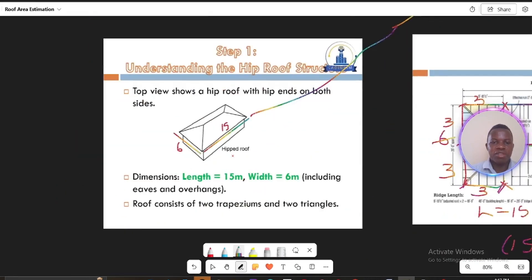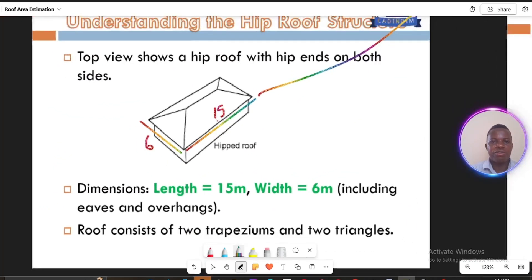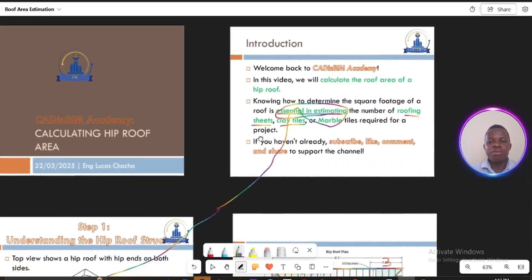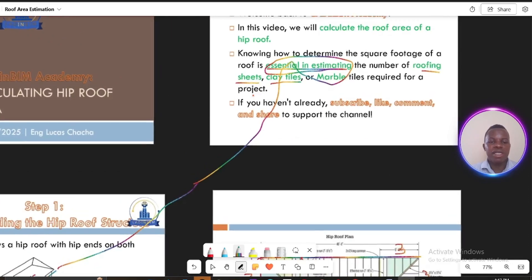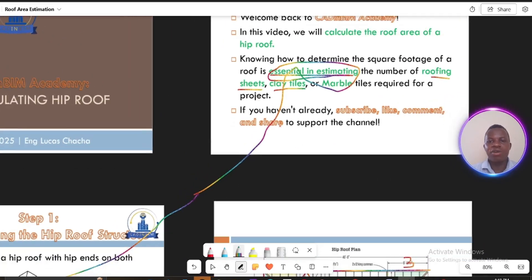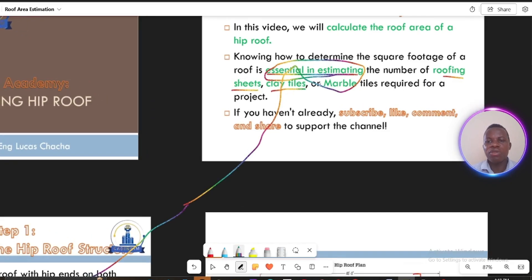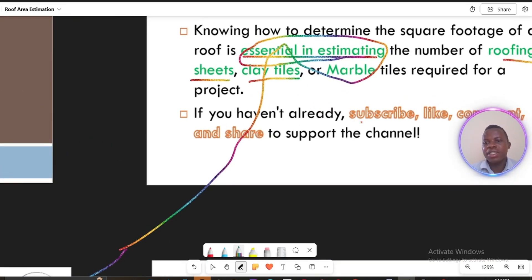This is what I'm referring to here, the area of this hip roof. The reason I'm teaching you how to calculate or estimate that area of a hip roof is to help you also estimate the number of roofing materials, maybe roofing sheets or roofing tiles.